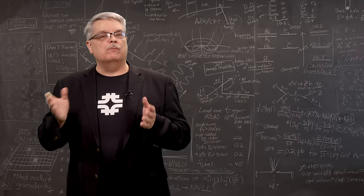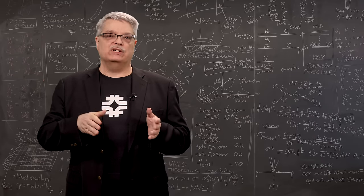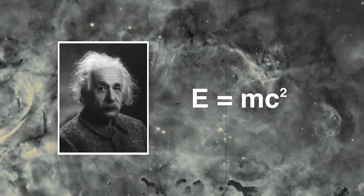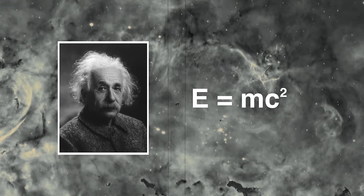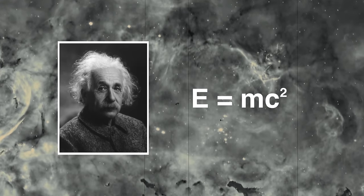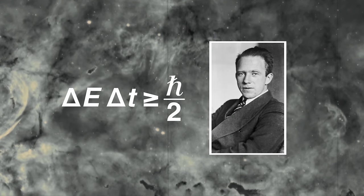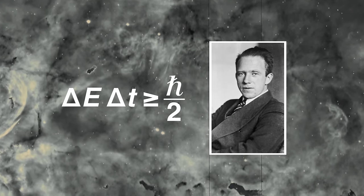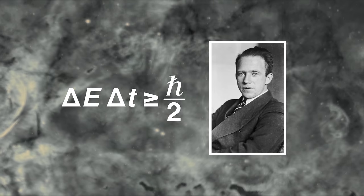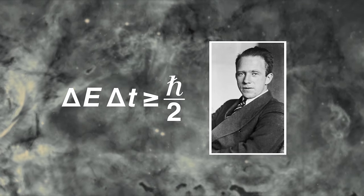Now there are a couple ideas from early 20th century physics that matter here. One is Einstein's equation of E equals mc squared, which says that mass is energy and vice versa. The other is the Heisenberg uncertainty principle, which says that for very short periods of time, energy doesn't have to be conserved.